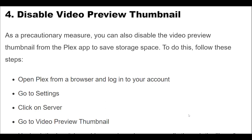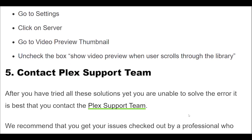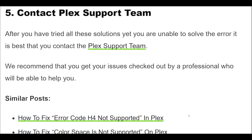As a precautionary measure, you can also disable the video preview thumbnail from the Plex app to save storage space. Open Plex from a browser and log into your account. Go to Settings, click on Server, go to Video Preview Thumbnail, and uncheck the box 'Show video preview when user scrolls through the library.'